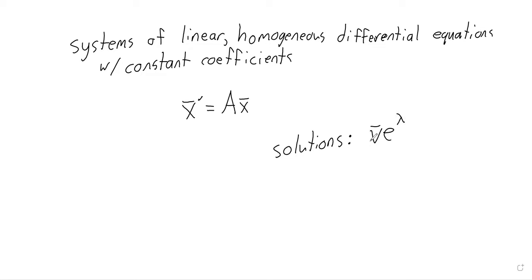The system has solutions of the form v·e^(λt), where v and λ are an eigenvalue-eigenvector pair — that is, Av equals λv.